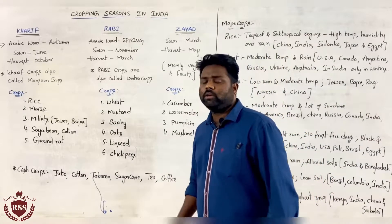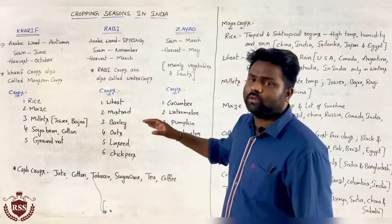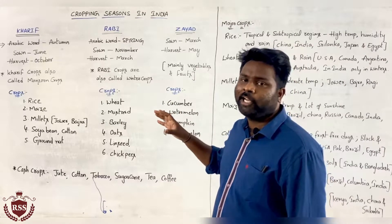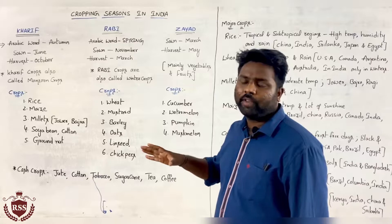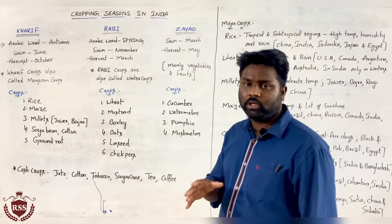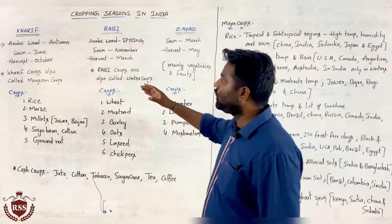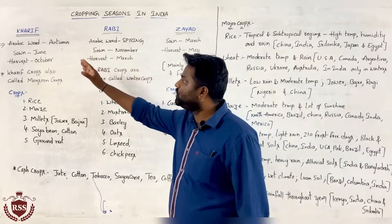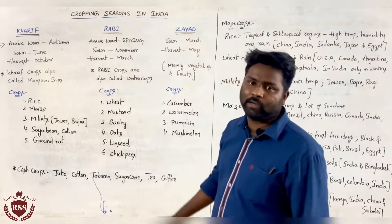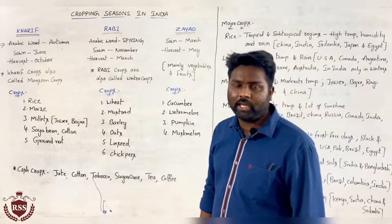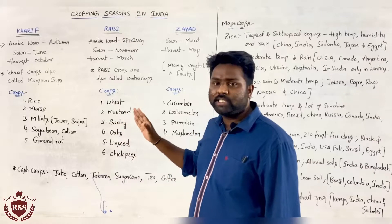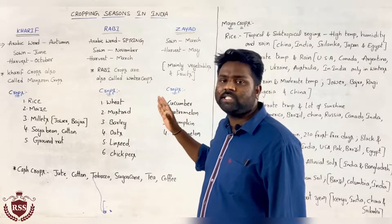Coming to the cropping seasons in India, the cropping seasons in India are classified into three types. Those are Kharif season, Rabi season, and Zayad season.